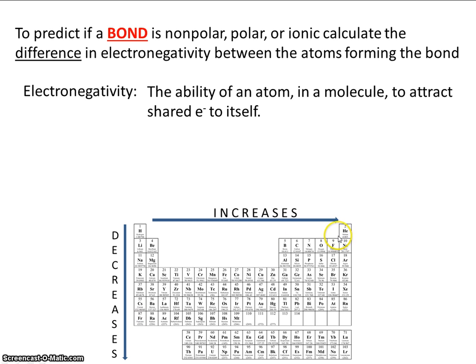So on our periodic table, francium, sorry, fluorine, is the most electronegative element. Fluorine likes electrons the most.